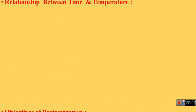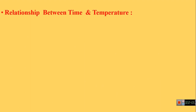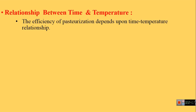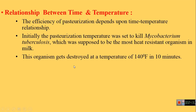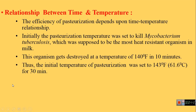What is the relationship between time and temperature in the pasteurization process? The efficiency of pasteurization depends upon the time-temperature relationship. The initial pasteurization temperature was set to kill Mycobacterium tuberculosis, which was considered the most heat-resistant pathogen in milk. This organism is destroyed at 140°F in 10 minutes. Therefore, the initial temperature of pasteurization was set to 143°F (61.6°C) for 30 minutes.